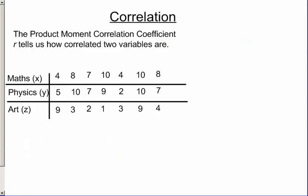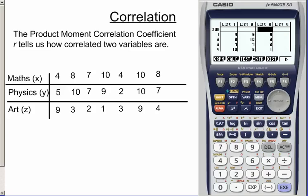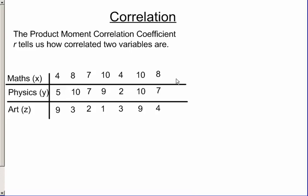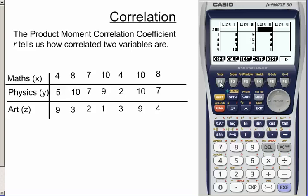We're going to draw a scatter graph. We click on F1 for graph. We're then going to make sure we set it properly. So we go to set to make sure we set to a scatter graph. Here we can see we have a scatter graph for list one and list two, which is what we want. We hit enter to go back to the previous page. Now we go to graph one, which is the graph we want to plot, and it plots the scatter graph.